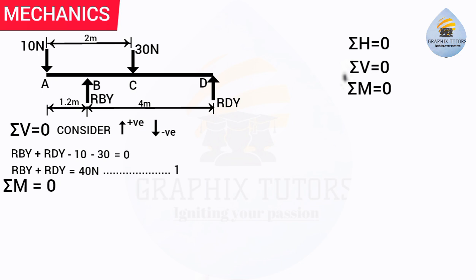We can take moments about either point B or point D — both are support points which makes the work easier. For this video, we will use point B. So, summation of moment about B equals zero. Our convention: clockwise moment is positive, anticlockwise moment is negative. Moment is the product of force and perpendicular distance. Taking moment about point B means B becomes the reference point — whatever force is at B produces zero moment.